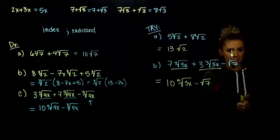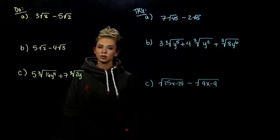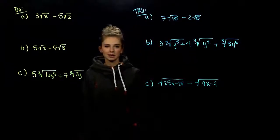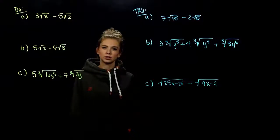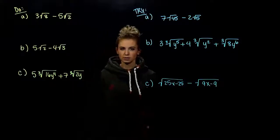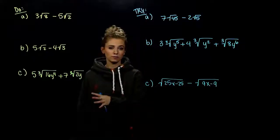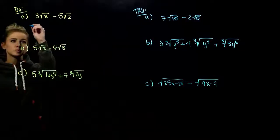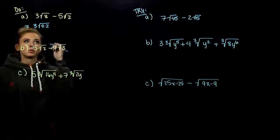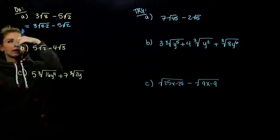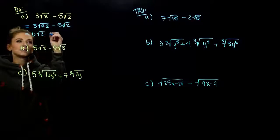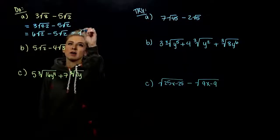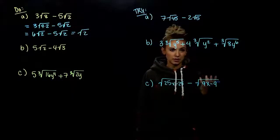What about when like radicals don't quite match? In this first example, we have the same index of 2, but the radicands don't match — one is 8, the other is 2. We need them exactly the same to combine. Can we simplify either radical? Root 8 can be broken into a perfect square and something else: the largest perfect square in 8 is 4, leftover is 2. Evaluating gives us 2, so 2 times 3 is 6 out front: 6 root 2 minus 5 root 2. Now we have like terms and get one factor of root 2.